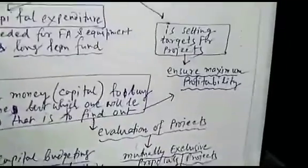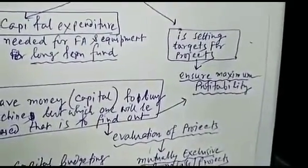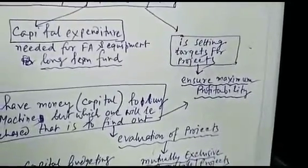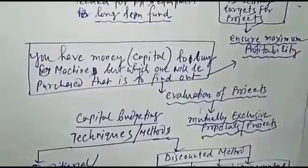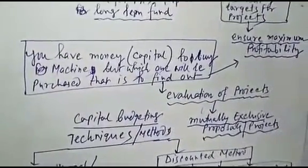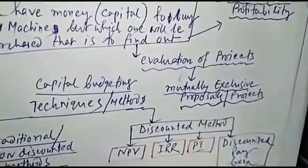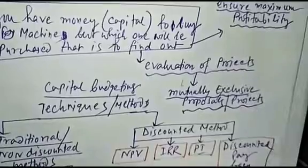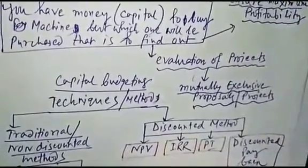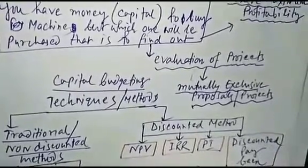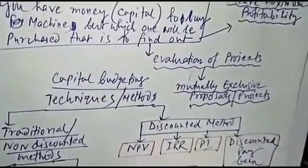Suppose you want to purchase a machine of 5 lakhs. You need to make money. Your decision is called an investment decision. Budgeting means setting targets - the alternative that ensures maximum profitability.